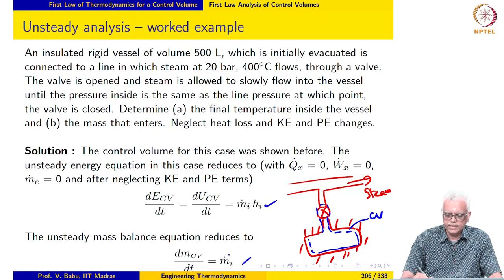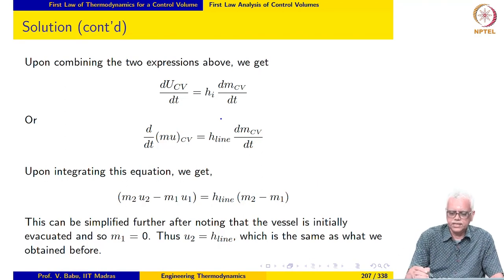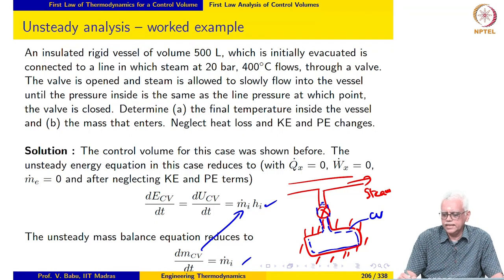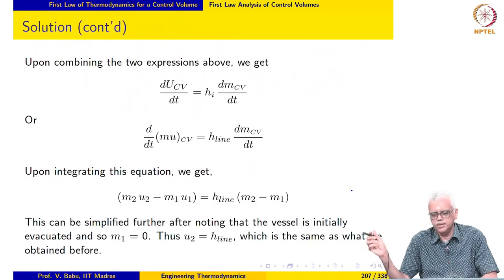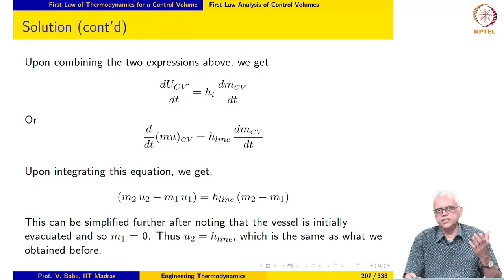If I combine these two equations, I get dU_cv/dt equal to H_i times dM_cv/dt. Notice that H_i equals H_line in this case. H_i is the enthalpy of the fluid at entry into the control volume, which enters with the same enthalpy as it had in the line since there is no thermodynamic process between the line and the entry point. So H_i equals H_line. U_cv is the total internal energy in the control volume.